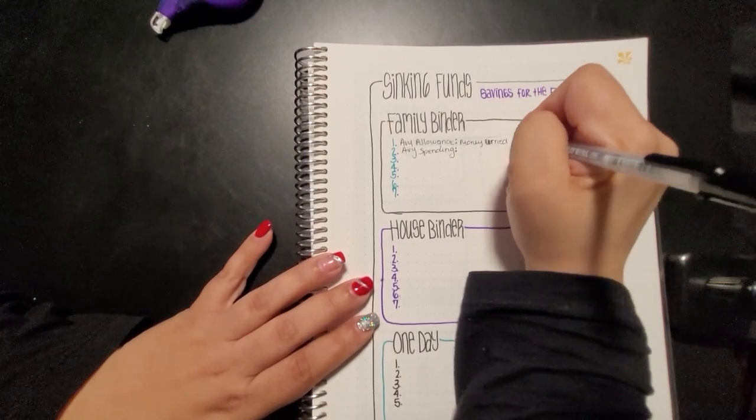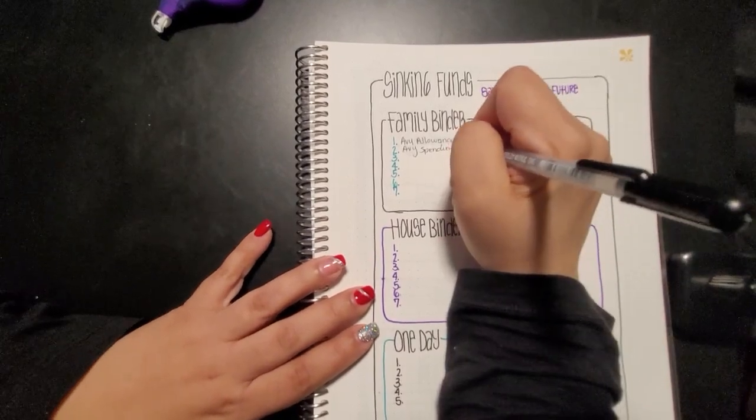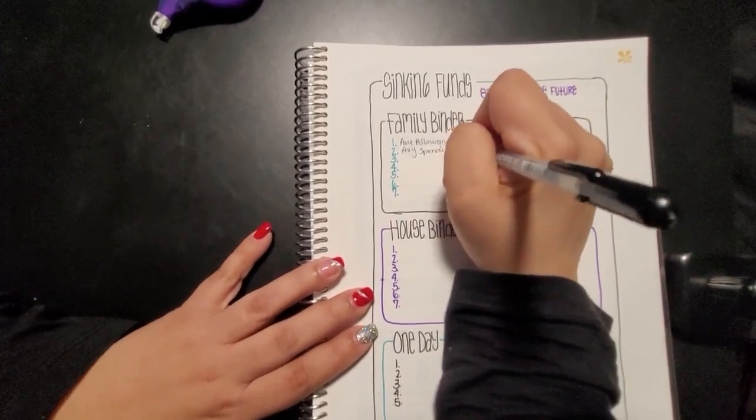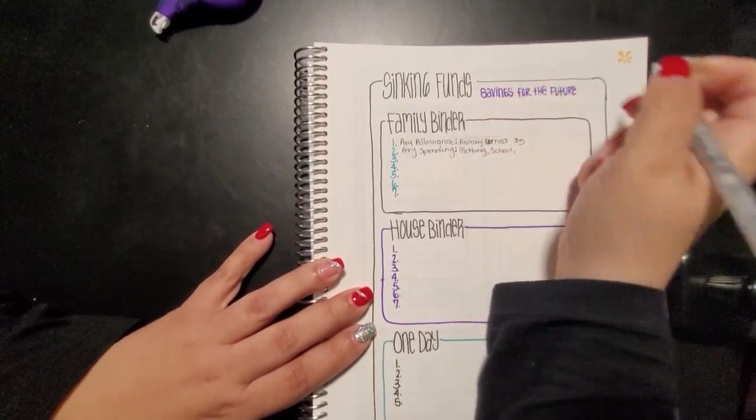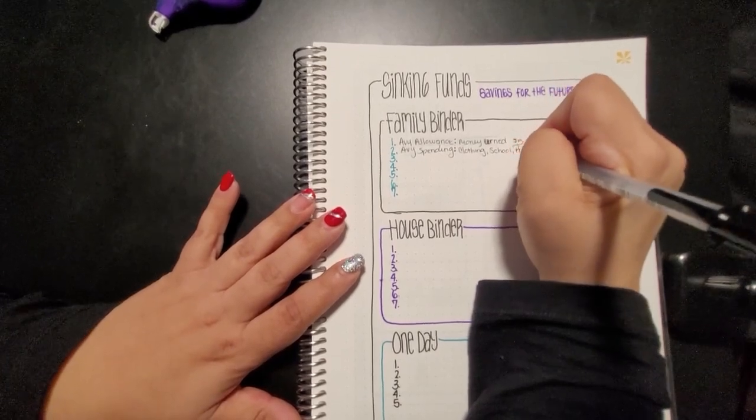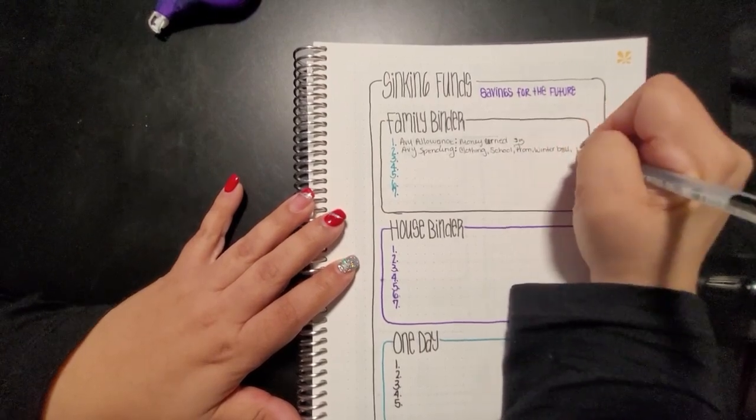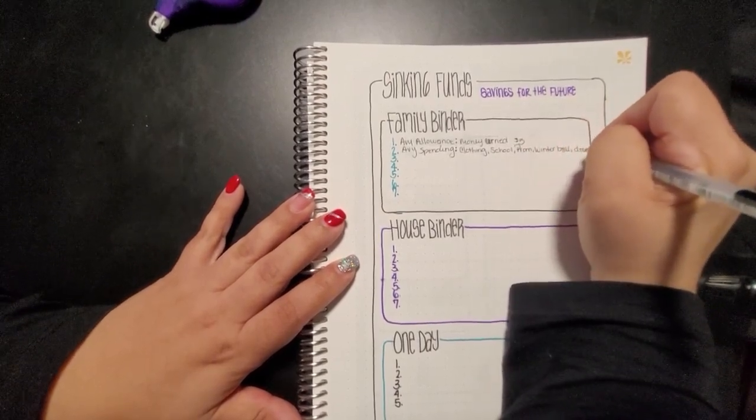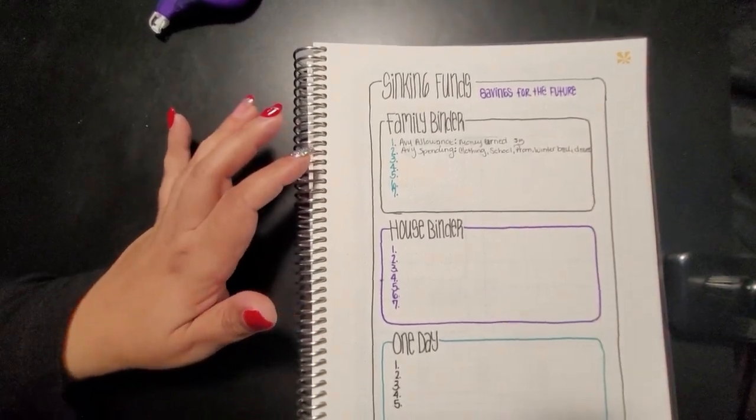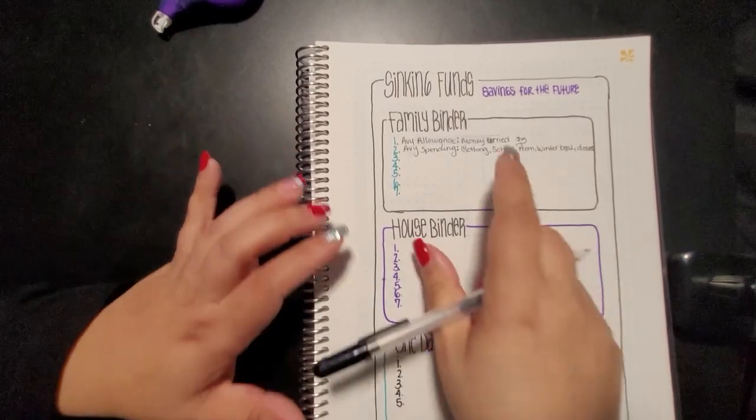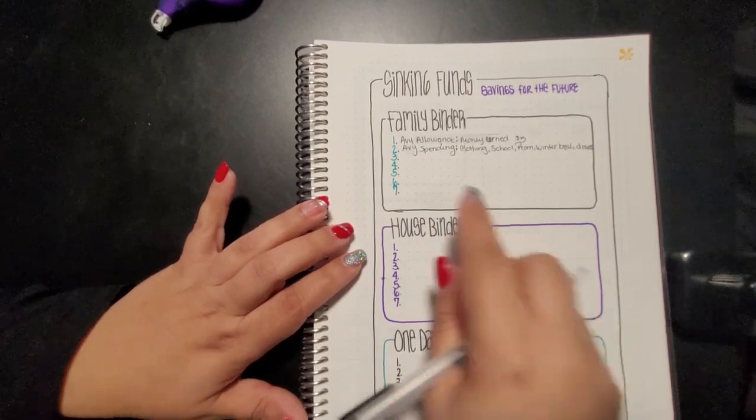Her spending is going to be her clothing, it's going to be her school, it's going to be the prom, winter ball, it's going to be driver's ed, etc. Anything that she will possibly need is going to be coming from this.